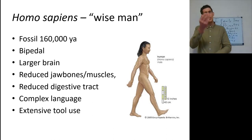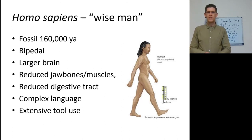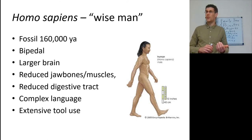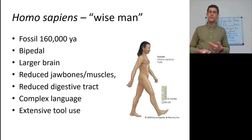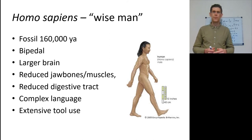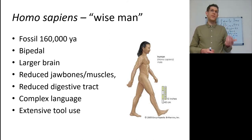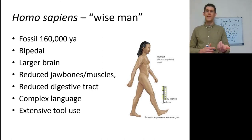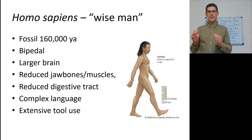So who are we? Wise men — Homo sapiens means wise men, and we got to make the names. The first fossils are about 160,000 years old. We're bipedal, which is different from all the other apes. We have a way larger brain compared to body size, reduced jaw bones and jaw muscles, a shorter digestive tract — maybe from eating more meat — very complex linguistics, and extensive tool use. Think about all the tools used just to communicate this to your large brains.